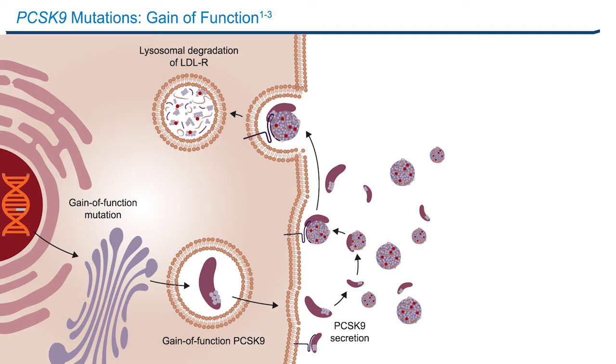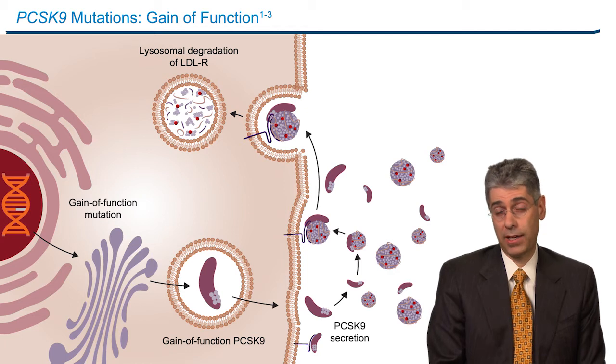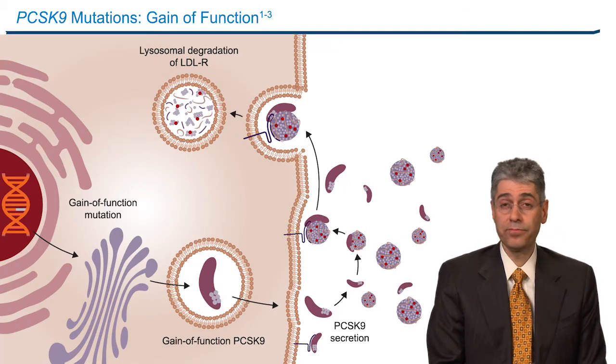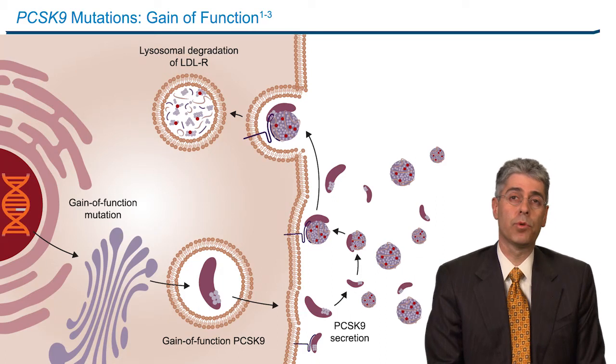The family found with the phenotype of familial hypercholesterolemia — or high levels of cholesterol — had gain-of-function mutations in PCSK9. That means they had fewer hepatic LDL receptors available on the surface to take cholesterol out of the circulation, and so they had more circulating LDL cholesterol, and thus the phenotype of familial hypercholesterolemia.